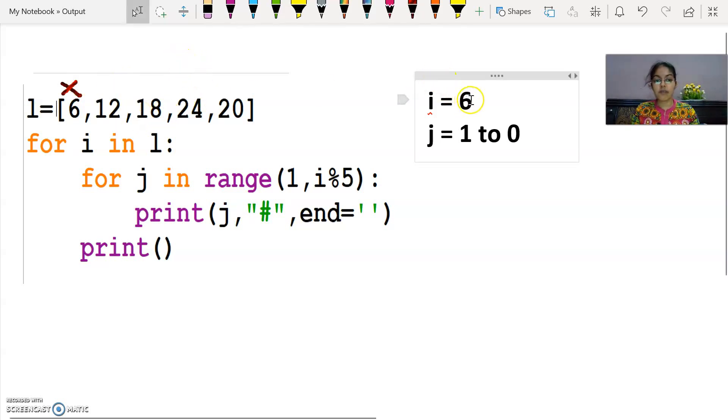Next time, the variable i will take value 12. So j equals 1. Where will it run till? i modulus 5. What is i's value? 12. 12 modulus 5. When we divide 12 by 5, 5 twos are 10, 12 minus 10 is 2. So what remainder will come? 2. And 2 is the remainder, so the loop will run till one less, that means till 1. That means in j only one value will come. And which value will come? 1. This loop will execute only once.